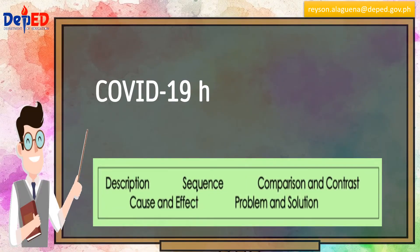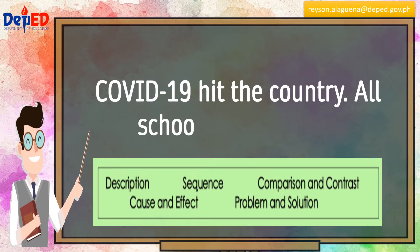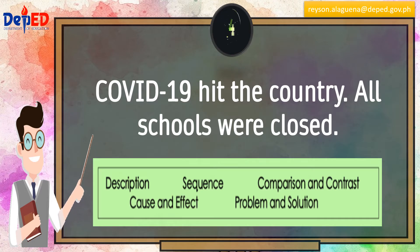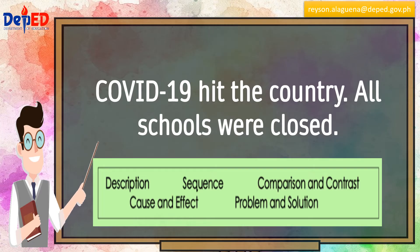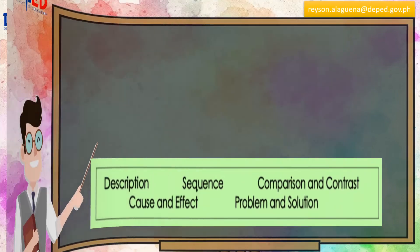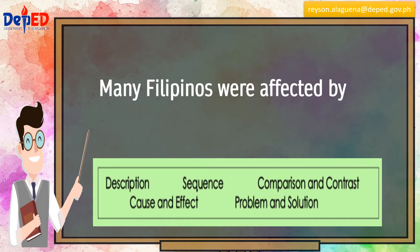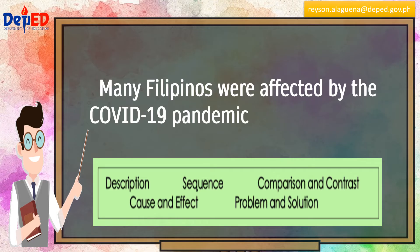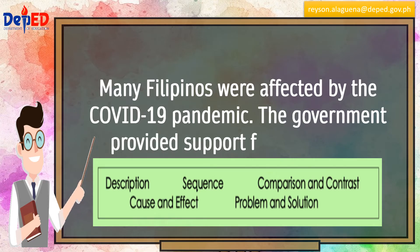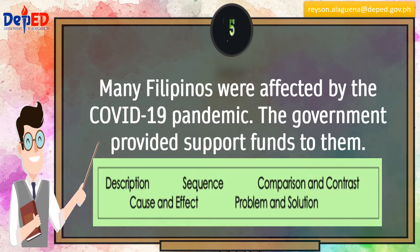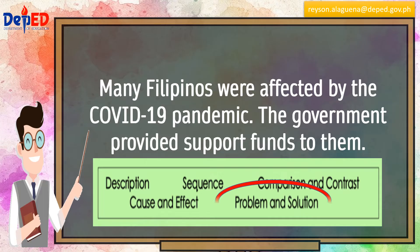COVID-19 hit the country and all schools were closed. This is a cause and effect. Many Filipinos were affected by the COVID-19 pandemic and the government provided support funds to them. This is a problem and solution.